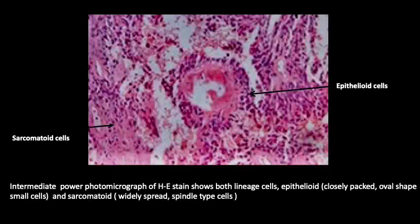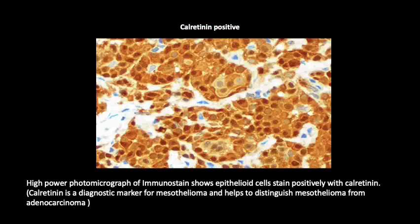The histopathology picture shows both lineages of cells — the epithelioid cells as well as the sarcomatoid cells. The epithelioid cells are closely packed and oval to round in shape. The sarcomatoid cells are widely spread and spindle in shape. This slide shows the calretinin staining, which is positive.